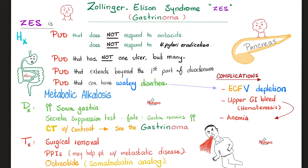The history includes peptic ulcer disease not responding to medications — not responding to antacids and not responding to H. pylori eradication. Moreover, there are many ulcers, not just one. Most patients with peptic ulcer have an ulcer in the stomach or in the first part of the duodenum, but in gastrinoma, these ulcers extend beyond the first part of the duodenum. We also see diarrheal symptoms and volume depletion.